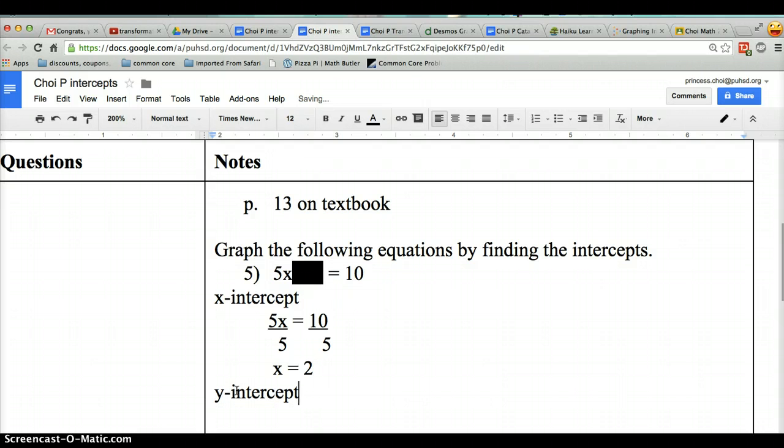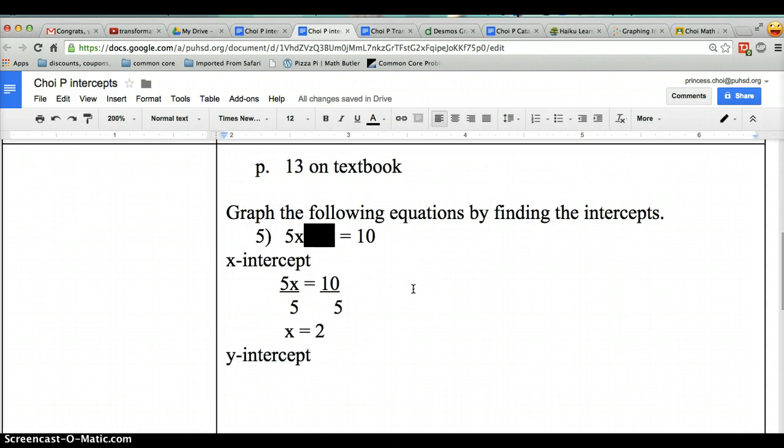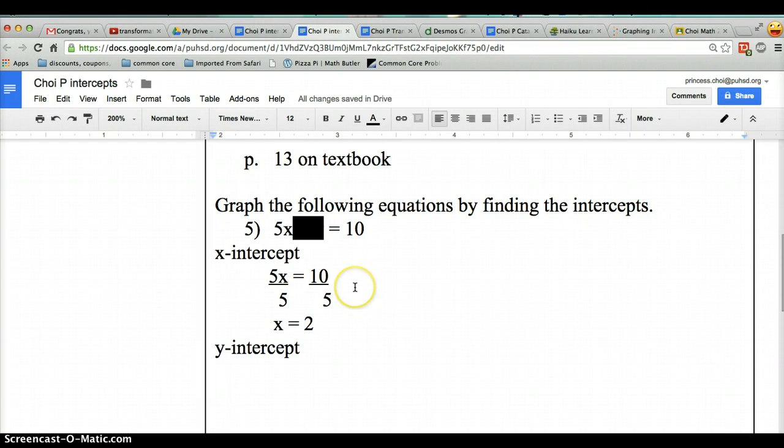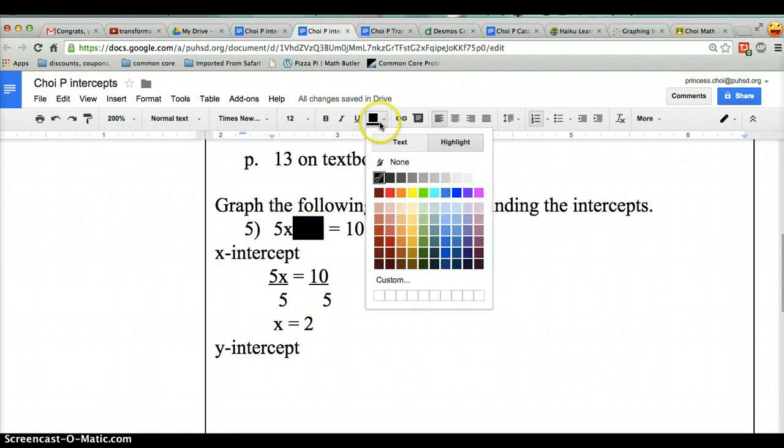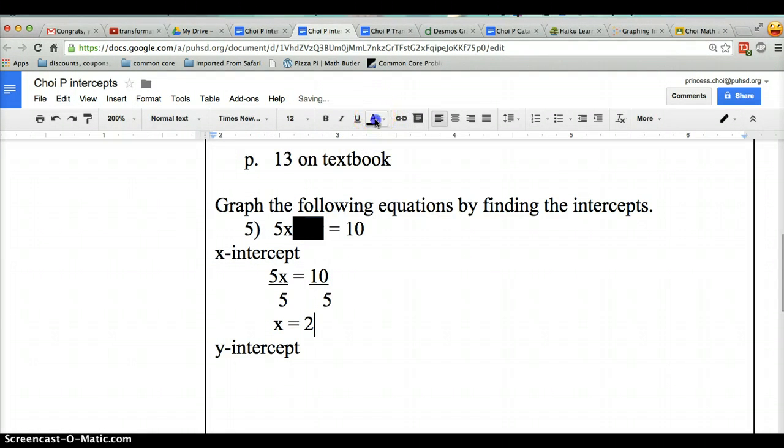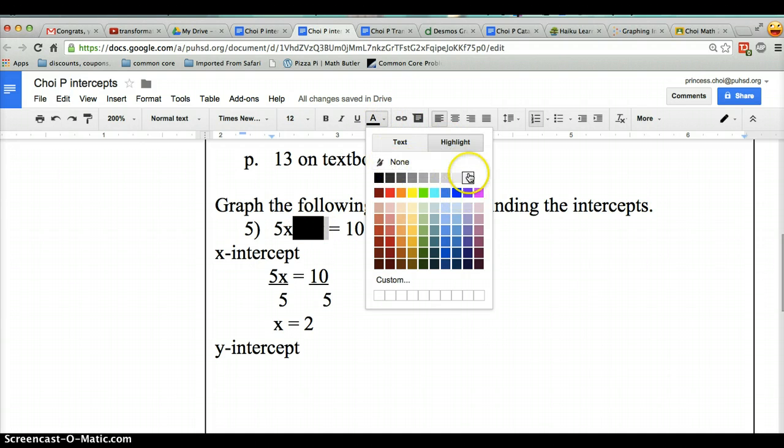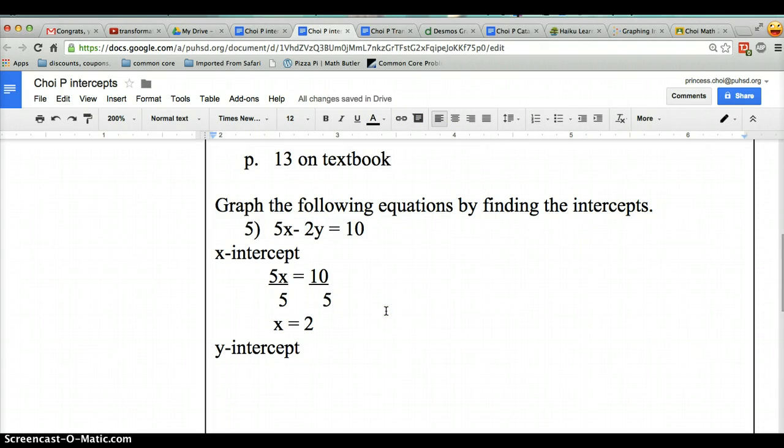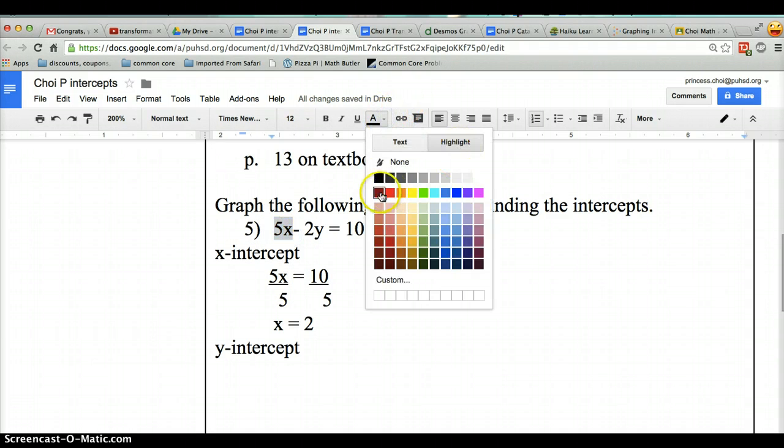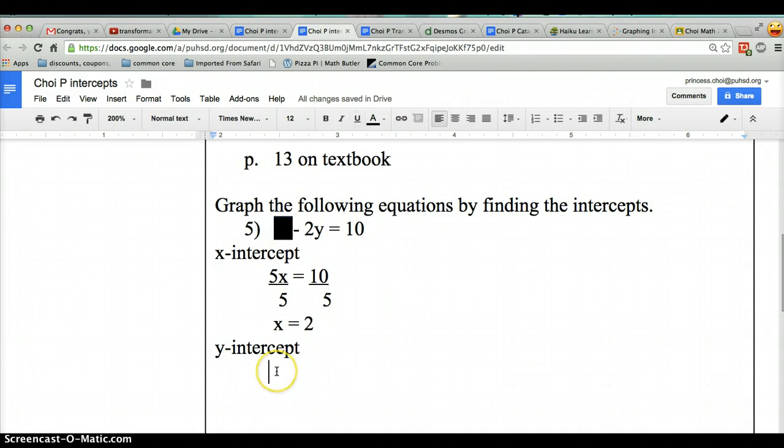So then let me ask you now, if you want to find the y-intercept, what do you think I should block out or black out? The 5x, right? Because y-intercept means, now I'm going to go ahead and undo this. So now I can see everything. To find the y-intercept, what am I going to do? I'm going to black out the 5x. So let's go ahead and change the highlight to 5x, and now what do I have left? I got negative 2y equals 10.